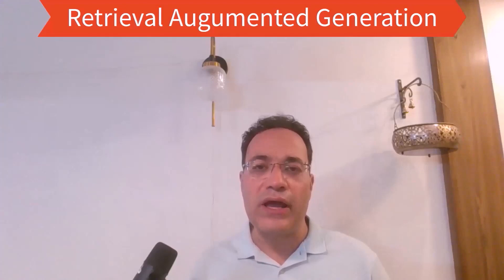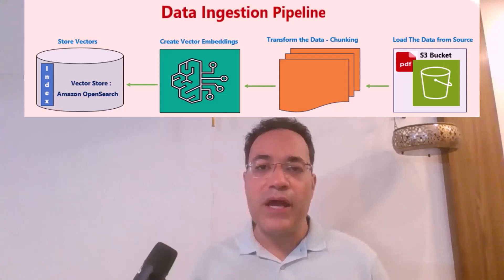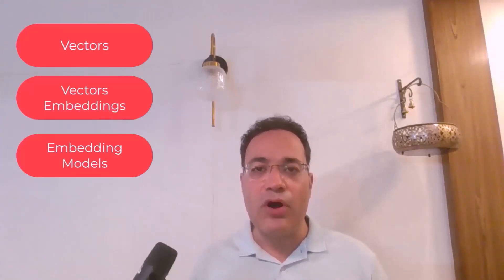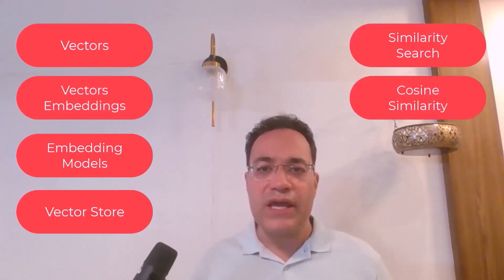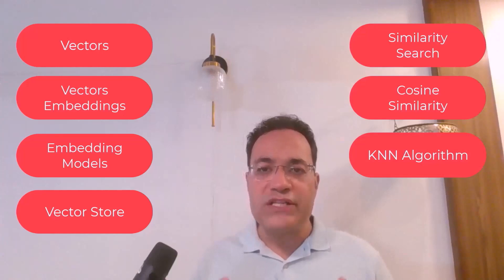If you're looking to build any meaningful generative AI enterprise application, you need to augment the output of the large language model with data from the internal data source using retrieval augmented generation or RAG. But before you can use the RAG process, you need to build a data ingestion pipeline, and for that you need to have a clear understanding of some key terms such as vectors, vector embeddings, embedding models, vector store, similarity search, cosine similarity, and KNN algorithm.